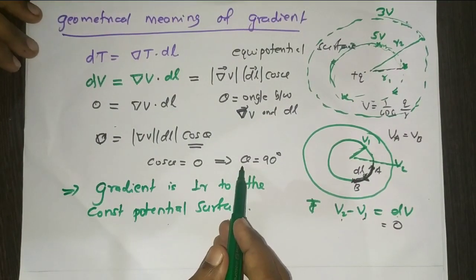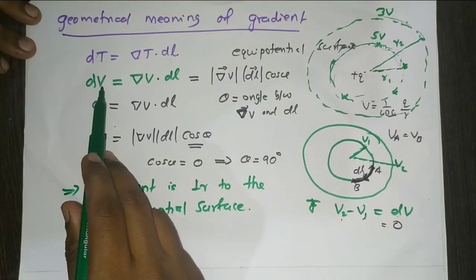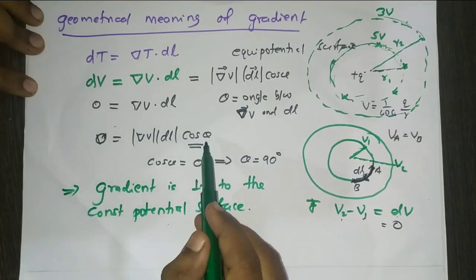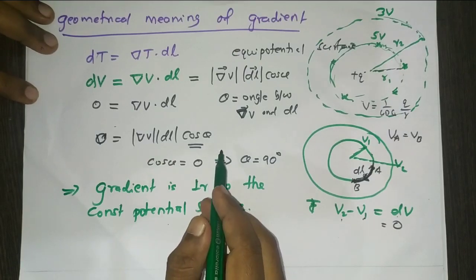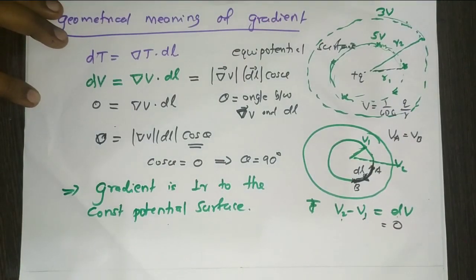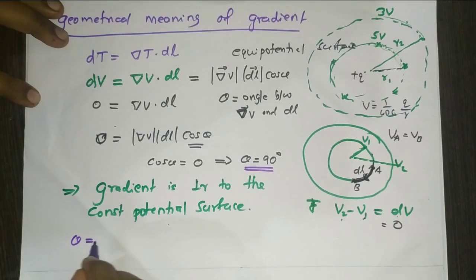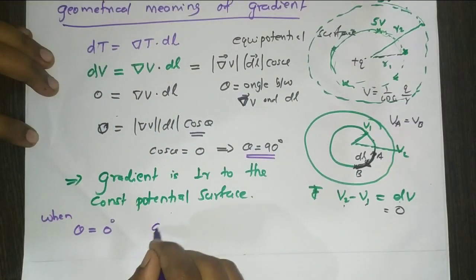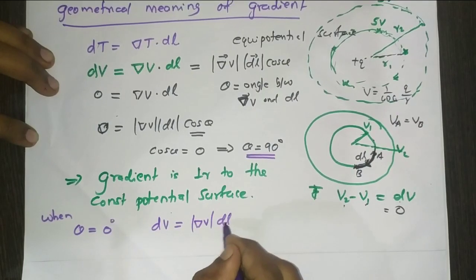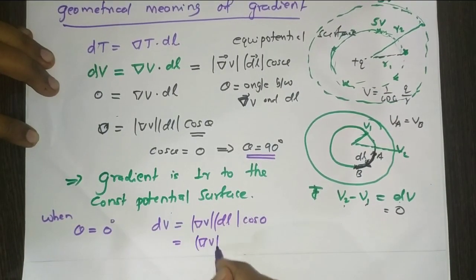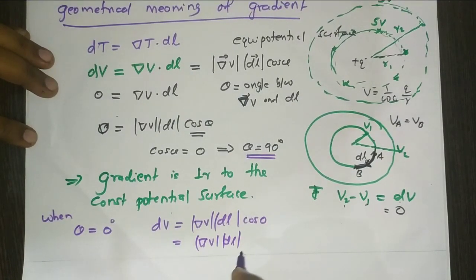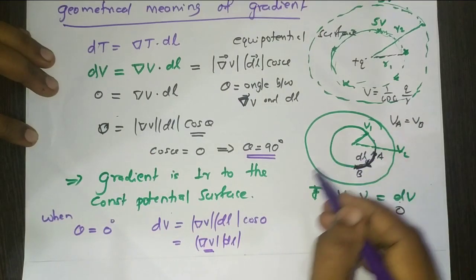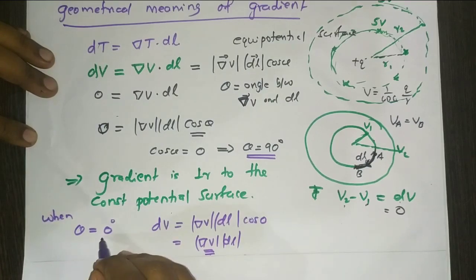Now, dV maximum occurs when cos theta equals 1, that is when theta equals zero degrees. Then dV = del V · dL · cos 0 = del V · dL. The maximum change in potential occurs when theta is equal to zero degrees.